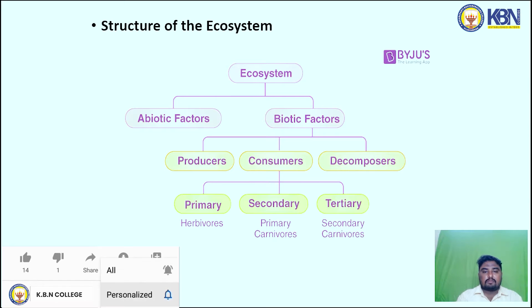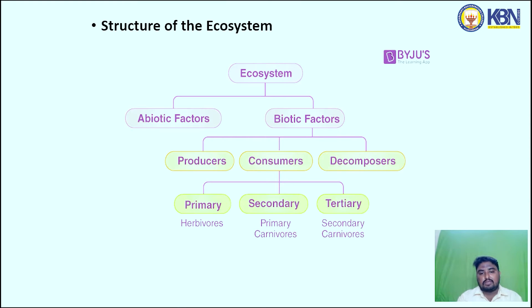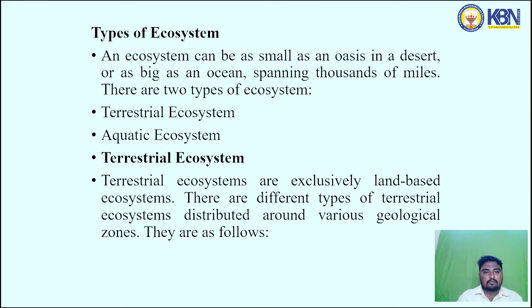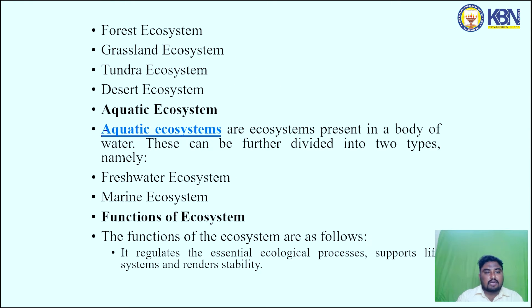The structure of the ecosystem consists of two parts: abiotic factors and biotic factors. Biotic factors are further divided into producers, consumers and decomposers. Consumers are divided into primary consumers, secondary consumers and tertiary consumers. Primary consumers are also known as herbivores; secondary consumers as primary carnivores; and tertiary consumers as secondary carnivores. An ecosystem can be as small as an oasis in the desert or as large as an ocean spanning thousands of miles. There are two main types: terrestrial ecosystems and aquatic ecosystems. Terrestrial ecosystems are land-based and include forest, grassland, tundra and desert ecosystems.